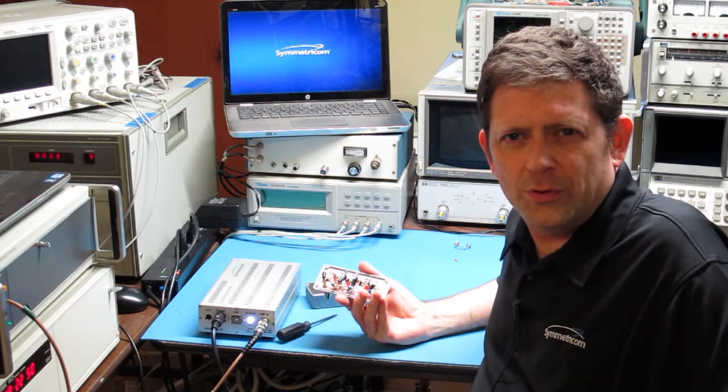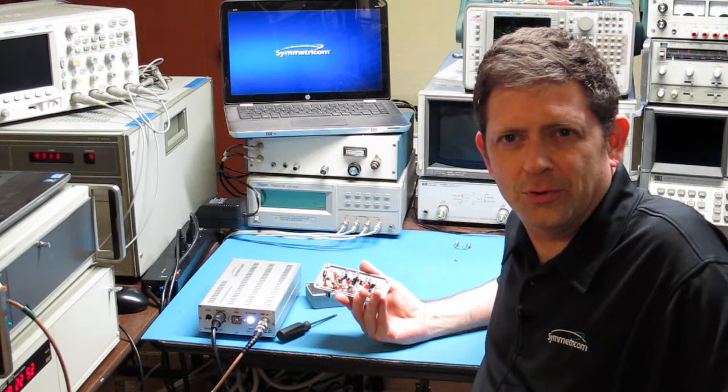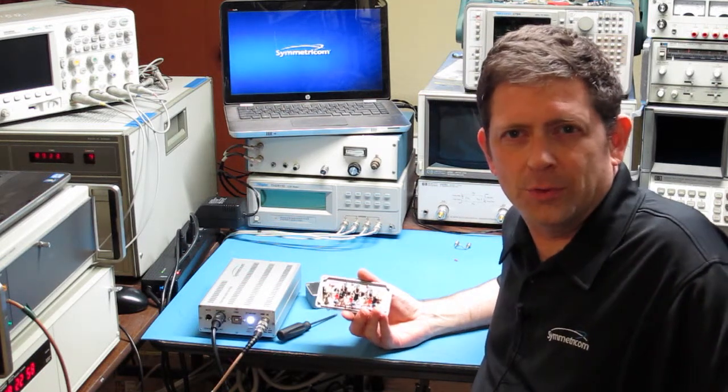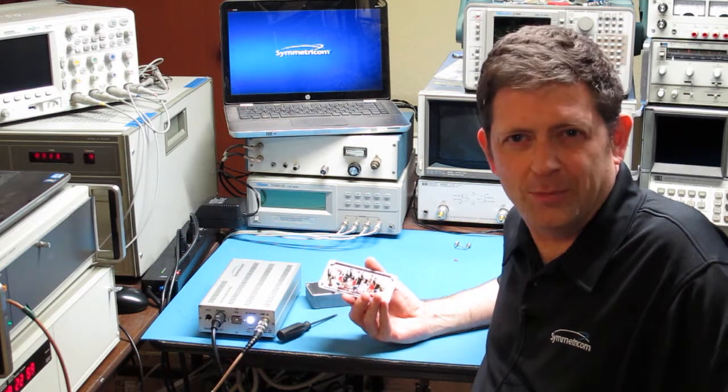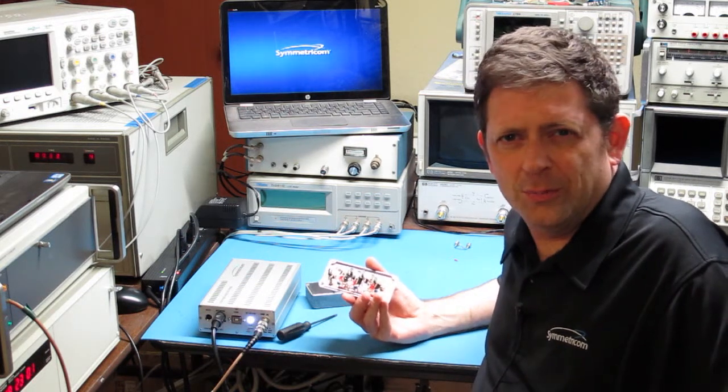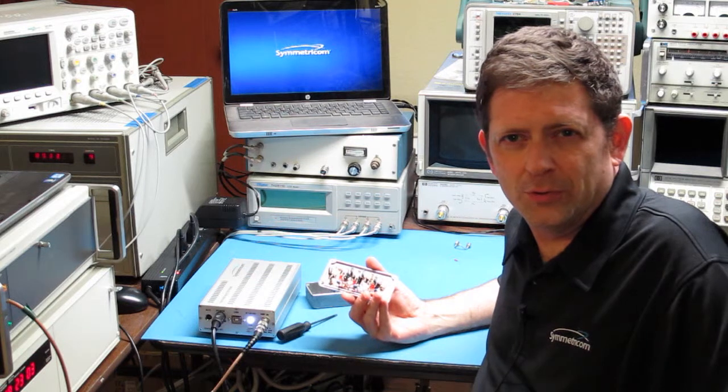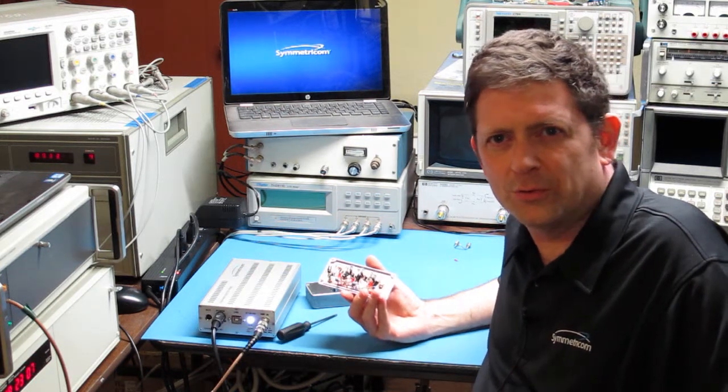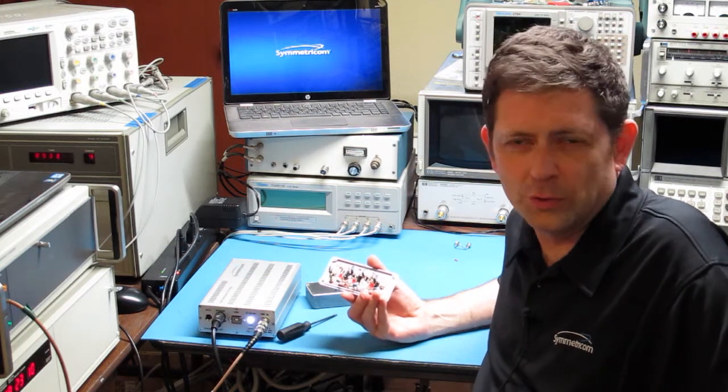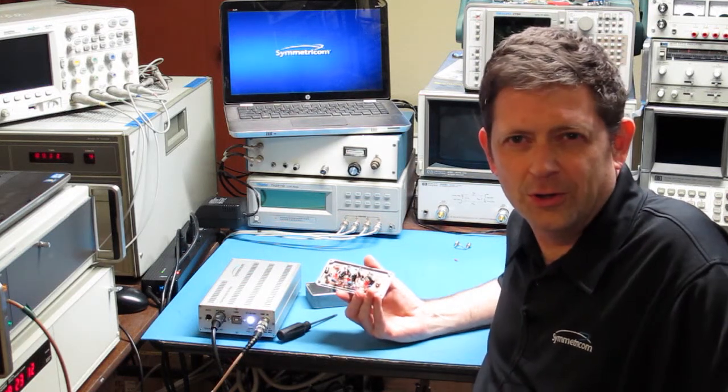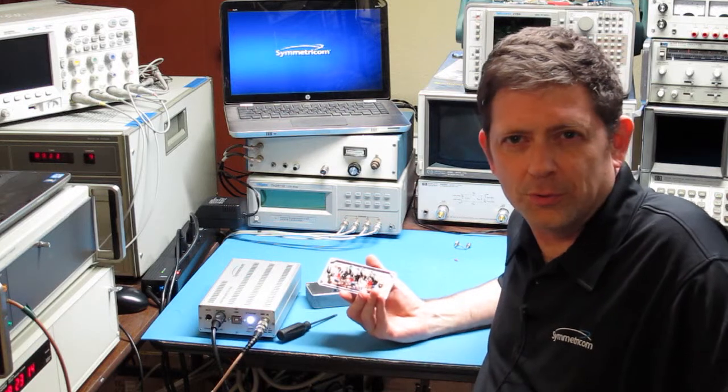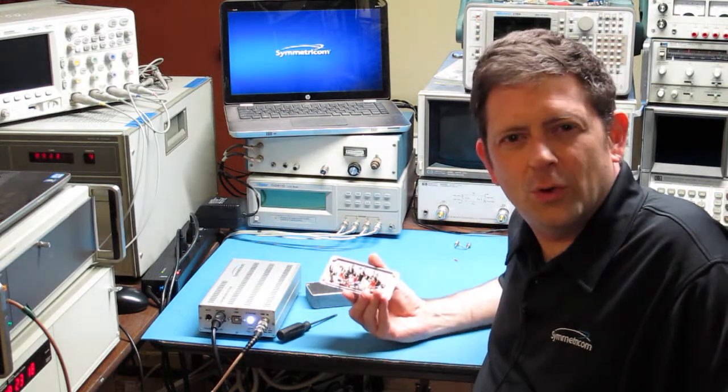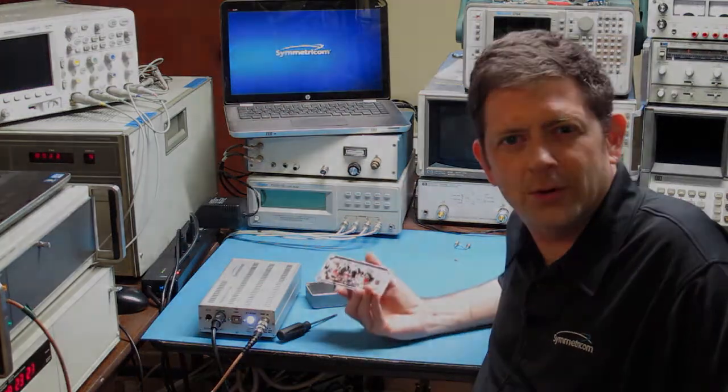To illustrate how these types of measurements are conducted, we'll look at a simple low-noise RF amplifier consisting of three common emitter stages with transformer feedback. As a building block, this circuit might be used in a five or ten megahertz distribution amplifier or as an isolation amp. Regardless, chances are you don't want this stage adding a lot of noise to the signal it's amplifying or causing a large temperature-dependent phase shift.